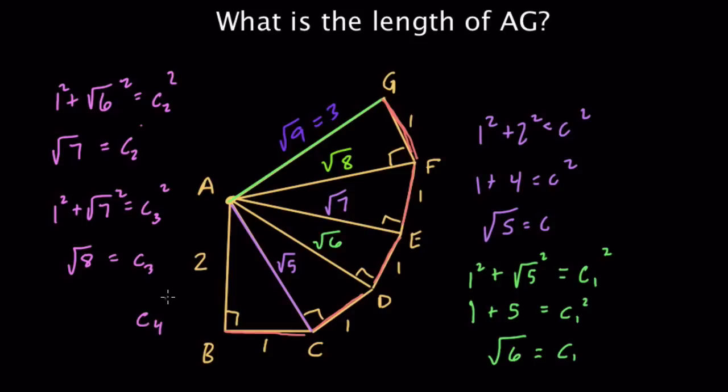And c sub 4, in this case, that's AG, squared is equal to what? 1 squared plus the square root of 8 squared. All right, and that's equal to the square root of 9. So c sub 4 is equal to the square root of 9, which is equal to 3.